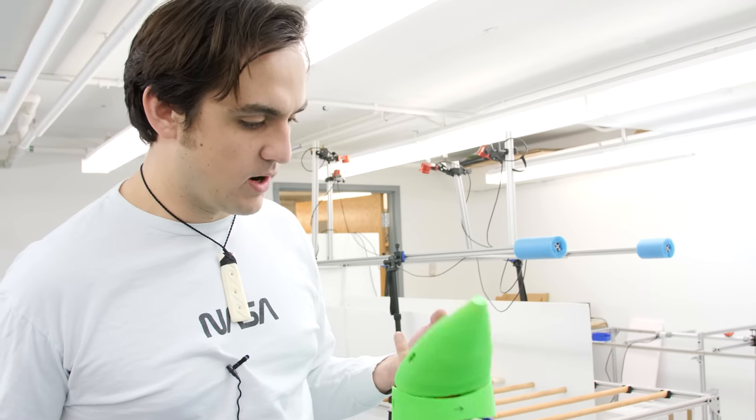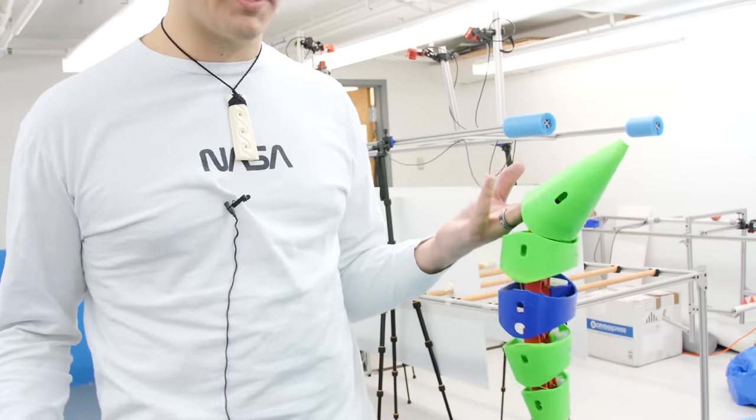And so the robot actually provides us an interesting set of circumstances. We can change the shape of the robot independent of the motions that the body makes. So if I'm studying eels and tuna, I can't tell the eel, would you mind swimming like a tuna for me, and vice versa. Whereas with a robot, we can make this shape like a tuna and say, robot, please swim like an eel.